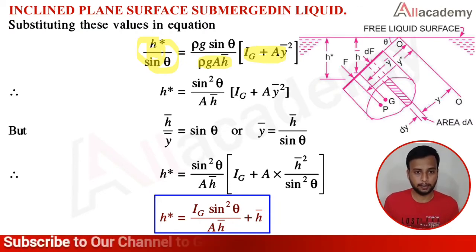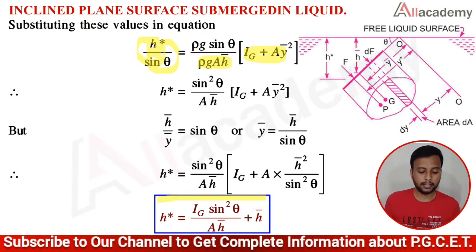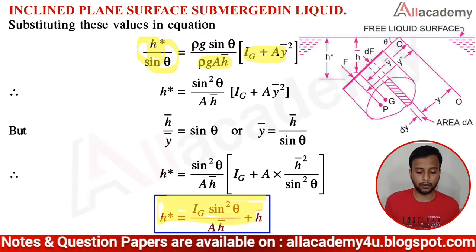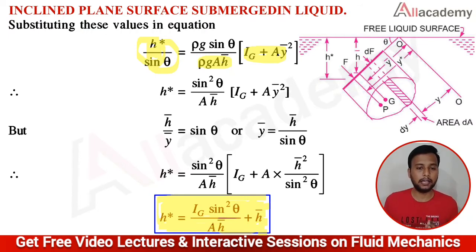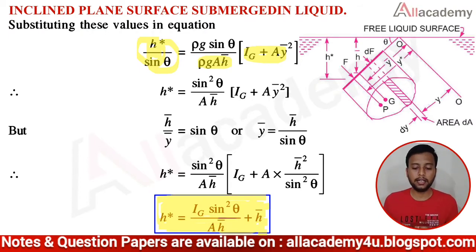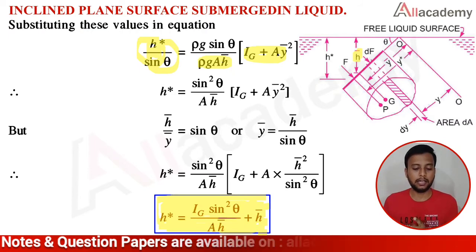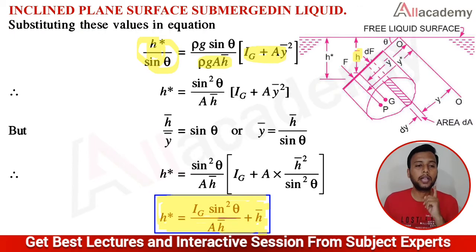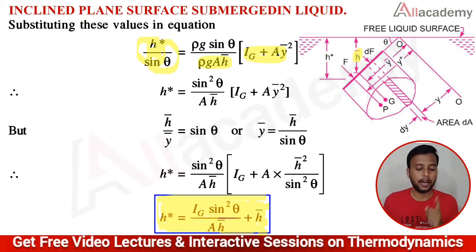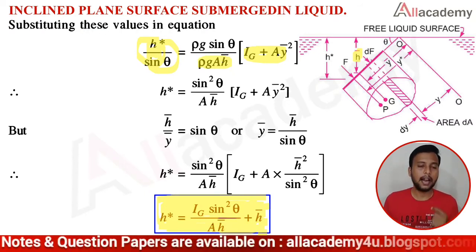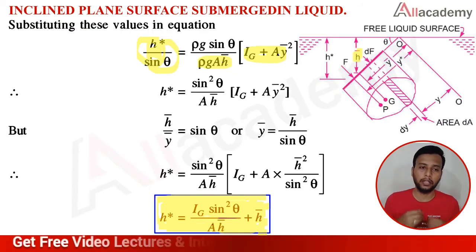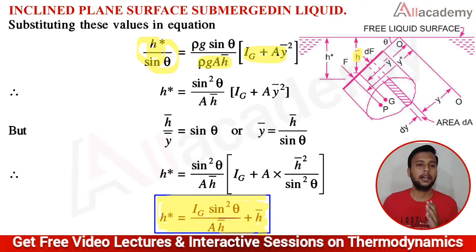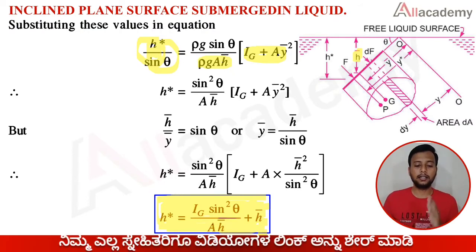After simplifying, the final equation is: H* = (IG sin²θ)/(AH̄) + H̄. Here H̄ is the distance from the free surface to the center of gravity, IG is the moment of inertia about the axis through the center of gravity, θ is the angle of inclination, and A is the area of the surface. Notably, H* is independent of the liquid in which the surface is submerged.